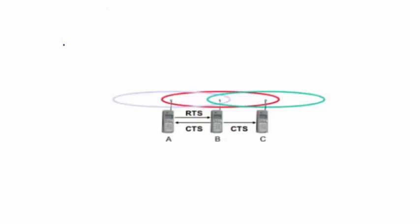It uses short signaling packets to avoid collision. There are two types of signaling packets. RTS that is request to send and CTS that is clear to send. RTS is sent from sender to receiver when it has some data to send. And CTS is sent from receiver to sender when it is ready to receive packets.